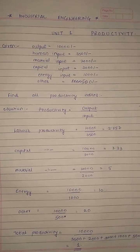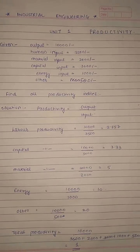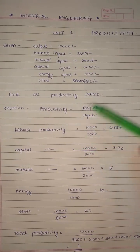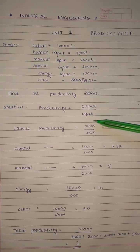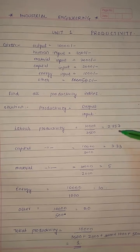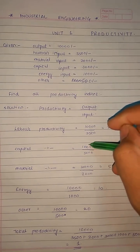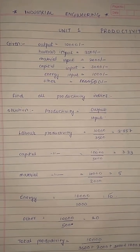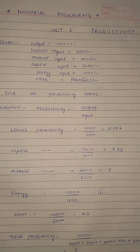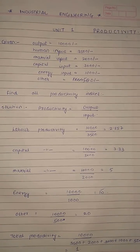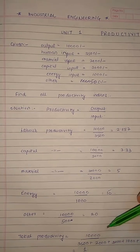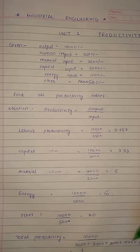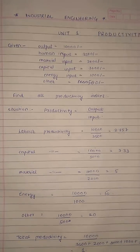Productivity is output divided by input — it can also be termed as efficiency. First we calculate labour productivity, which is output divided by labour charges of 3500, giving a labour index of 2.857. Similarly we calculate capital productivity, material indices, energy indices, and others. Then we find total productivity: output of 10000 divided by all inputs — 3500 labour plus material plus capital plus energy plus miscellaneous — giving a total productivity of 1.